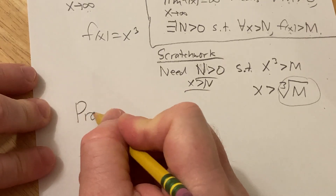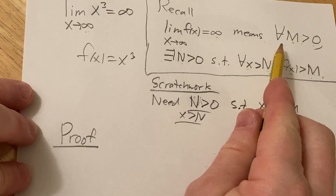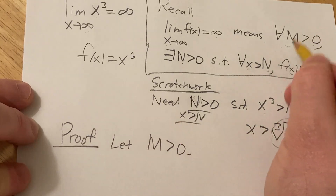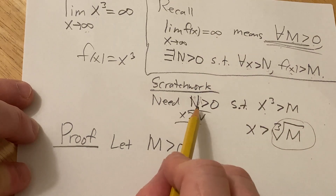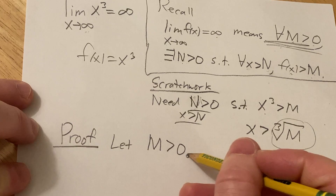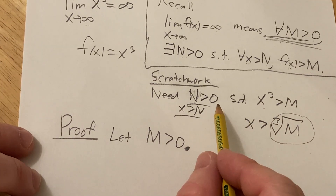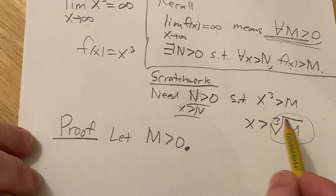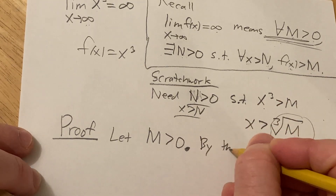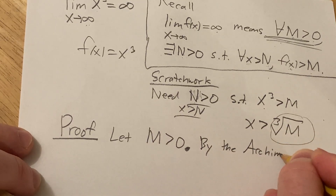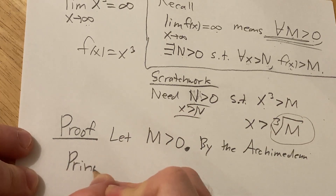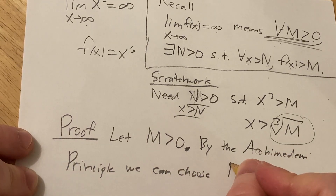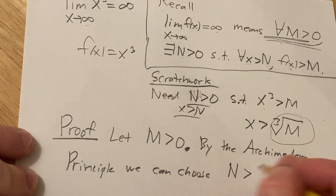So now I think we can do the proof. Proof. To do the proof we have to use this definition. We start by taking a positive number m — let m be greater than zero. That satisfies the first part of the definition. Now we need to find a positive number n. There's a principle in mathematics called the Archimedean principle, and it says that whenever you have a number, you can always find an integer that's bigger than that number. So by the Archimedean principle, we can choose an n bigger than the cube root of m.